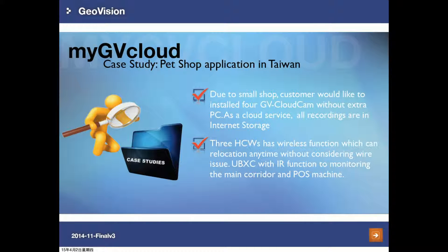The following is a real case from one of our clients in Taiwan. The client runs a POS store and wanted to install four GVCloud cameras without an extra PC, so that all recording data could be saved in Dual Vision cloud storage. Three HCW cameras are used and can be relocated anytime. The last camera is a box type with IR function, mainly used to monitor the main entrance and POS machine.